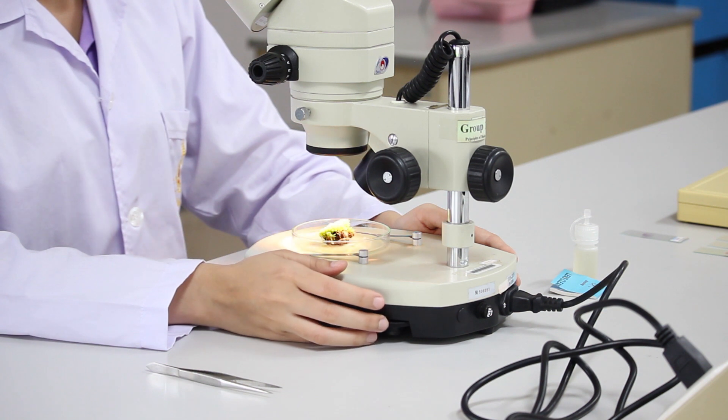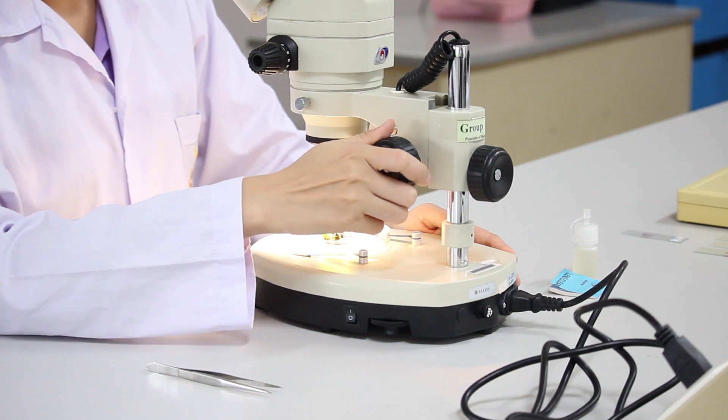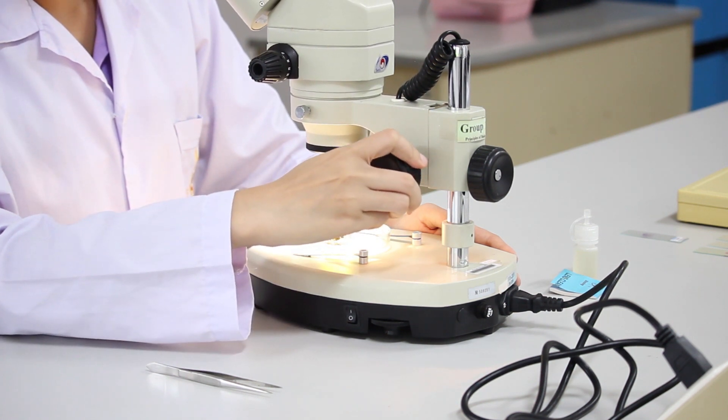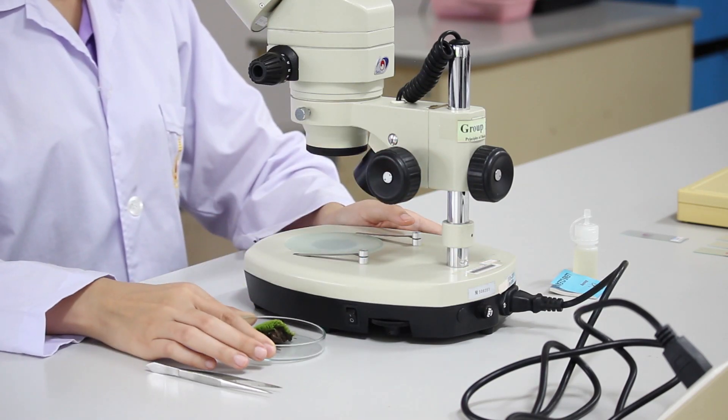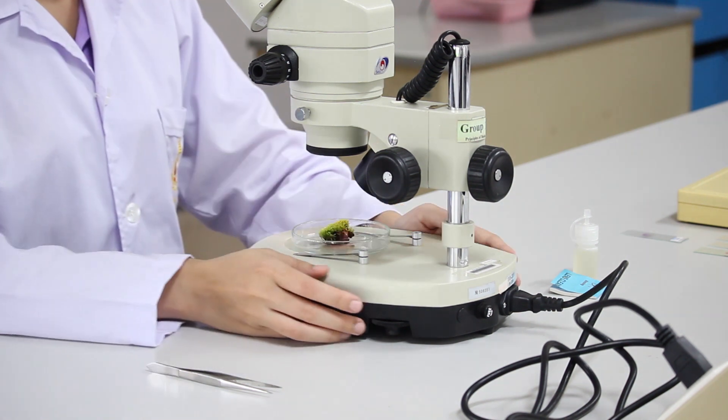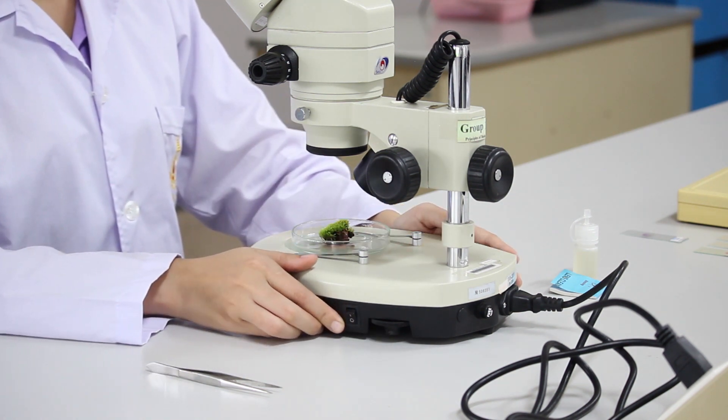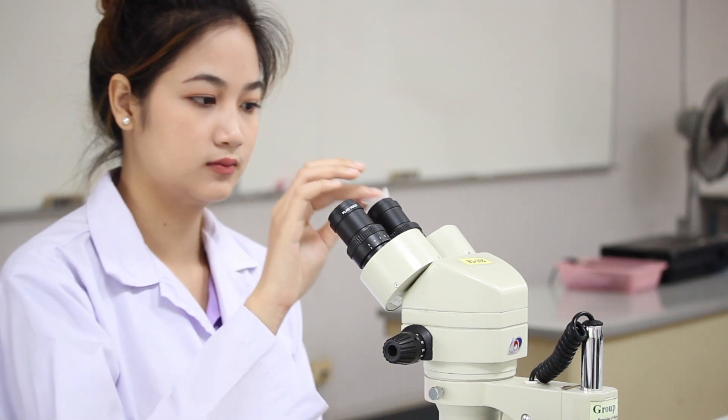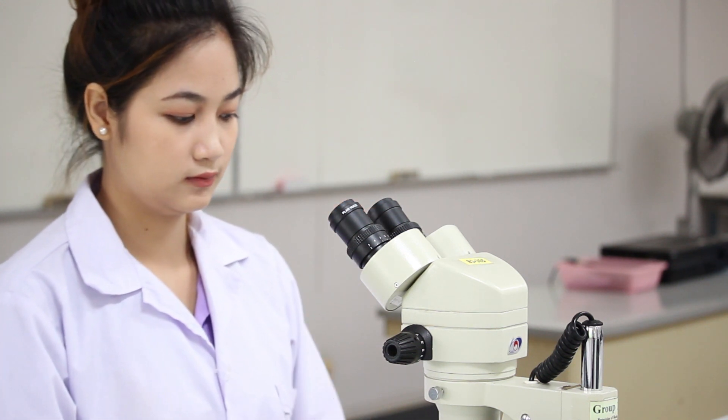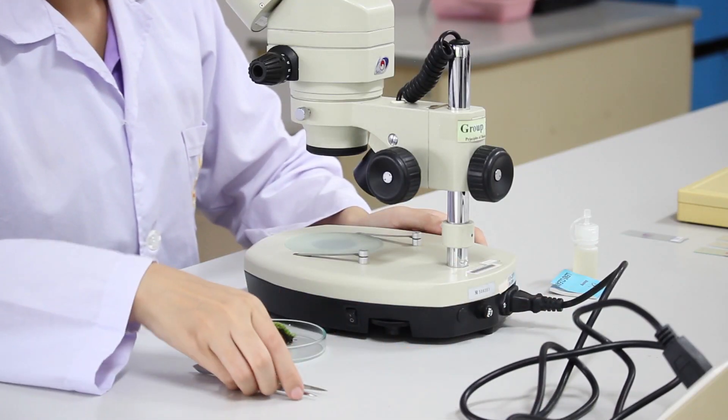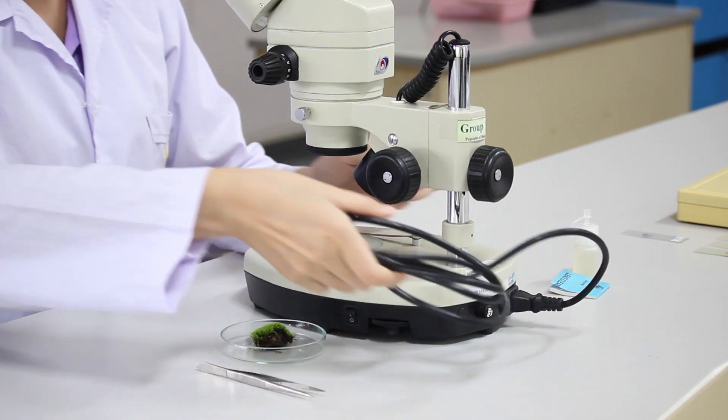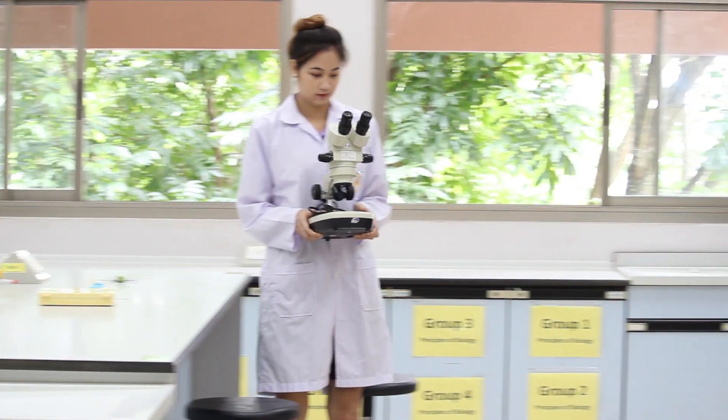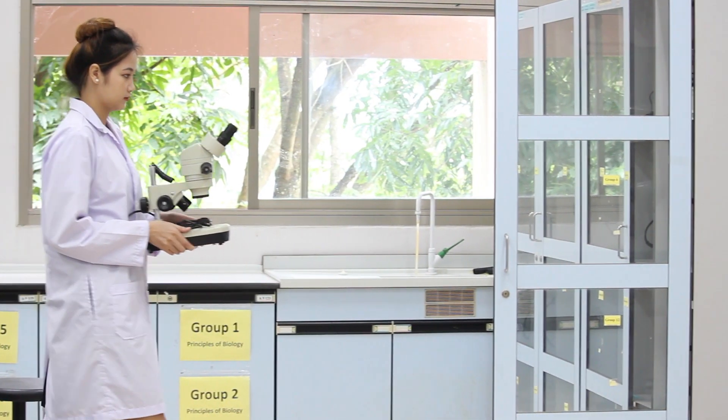After that, when you finish the observation, reduce the light intensity and then move the objective lens into an appropriate position. Then, take the specimen out from the stage and turn off the light sources. Clean the objective lens and eyepieces with lens paper. And then, unplug and place the power cord on the microscope stage. Then, return your microscope back to its cabinet and put it in the right place.